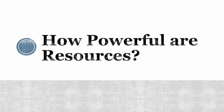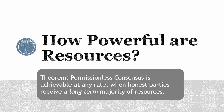Now that we have defined the properties of resources and given constraints on an execution about how resources enter the system, we ask: under what conditions do resources imply consensus? Our main result is that permissionless consensus is achievable at any rate ρ, as long as the honest parties receive a long-term majority of resources. This theorem does require that when the rate is high, the majority of resources must increase along with the rate — actually along with the square of the rate. But given any upper bound on the rate, there is a long-term honest majority that permits permissionless consensus, and we'll show how to construct a protocol that gives consensus even in the presence of a rather strong adversary.